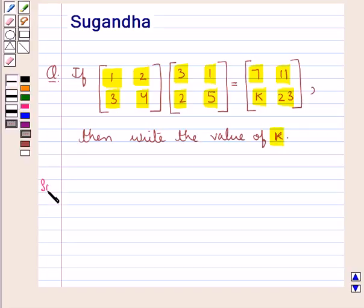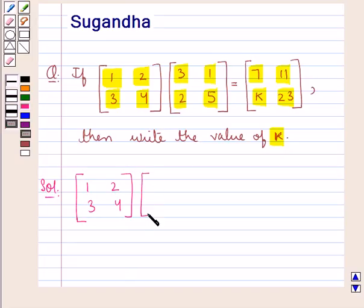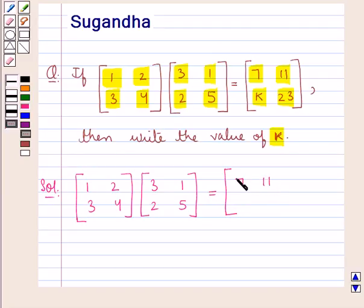Let's proceed with the solution now. We are given that the matrix with elements 1, 2 in the first row and 3, 4 in the second row, multiplied with the matrix with elements 3, 1 in the first row and 2, 5 in the second row, is equal to the matrix with elements 7, 11 in the first row and k, 23 in the second row. We are supposed to find the value of k.